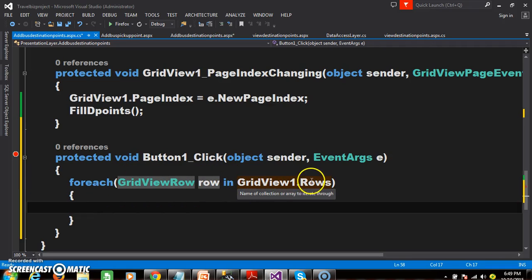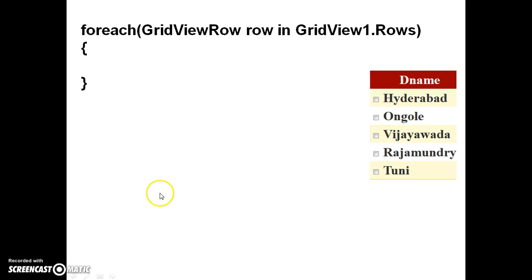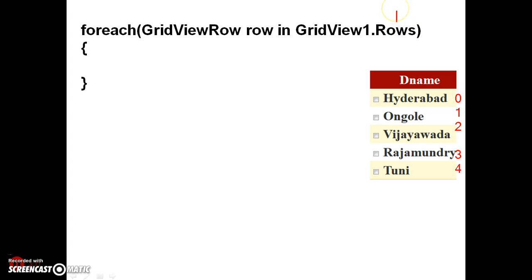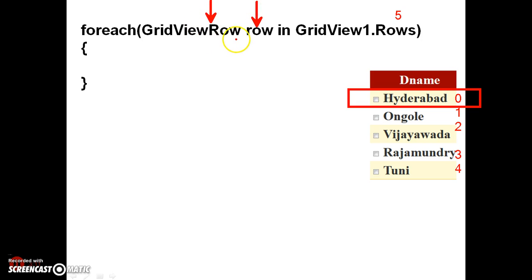So: for each GridViewRow row in GridView1.Rows. GridView is a collection of rows. Each and every row can be identified by using the index number. For example, if 5 rows are there, the index number always starts from 0. The number of rows available within the GridView is 5. The first entire row values will be stored in the row variable, which is of type GridViewRow. GridViewRow is a class and row is an object of that class.